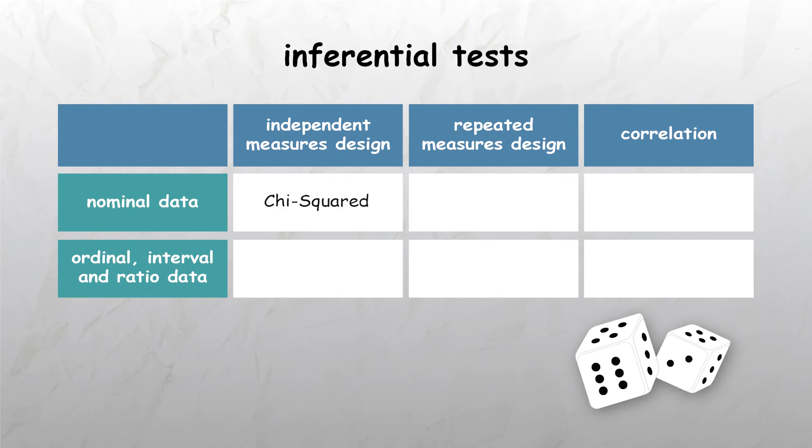The chi-square test is used for nominal data in a study that has used an independent measures design. The binomial sign test is used for nominal data in a study that has used a repeated measures design. There is no test for nominal data for a study that has used a correlation design, because nominal data doesn't give any genuine mathematical properties.